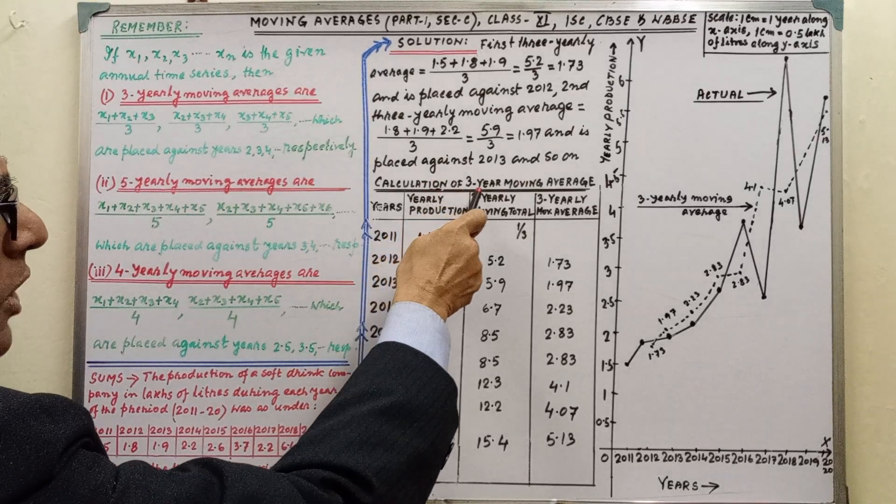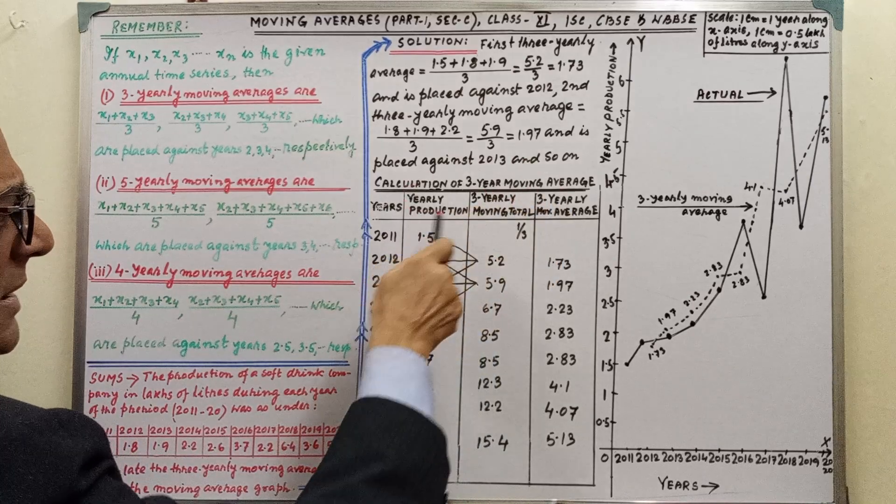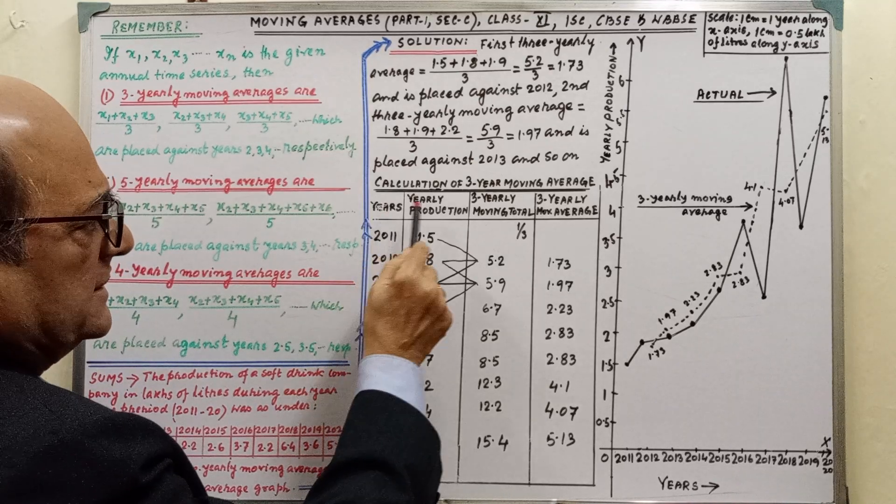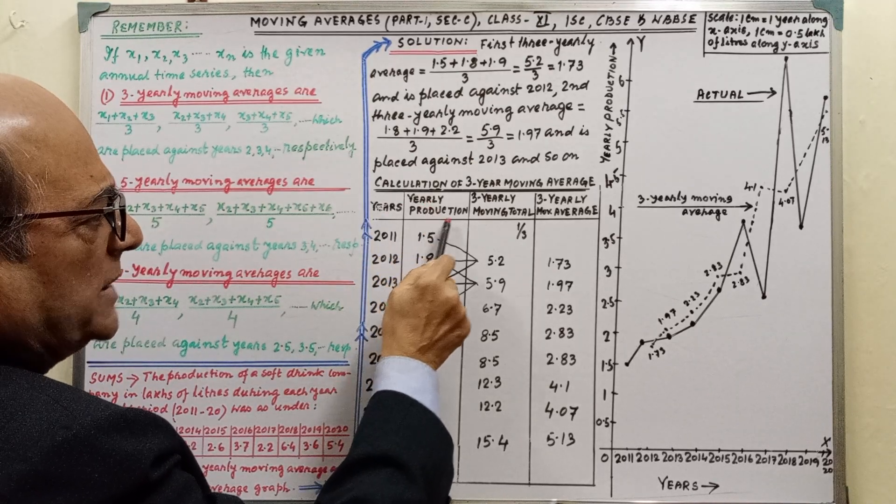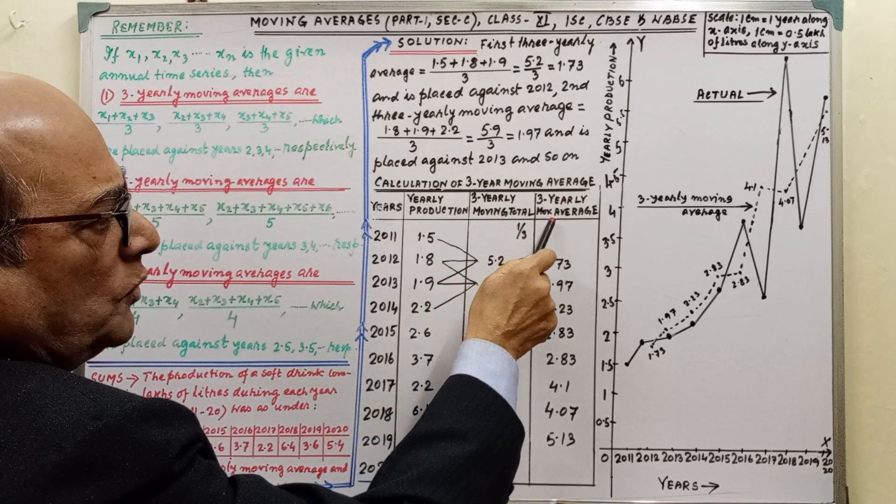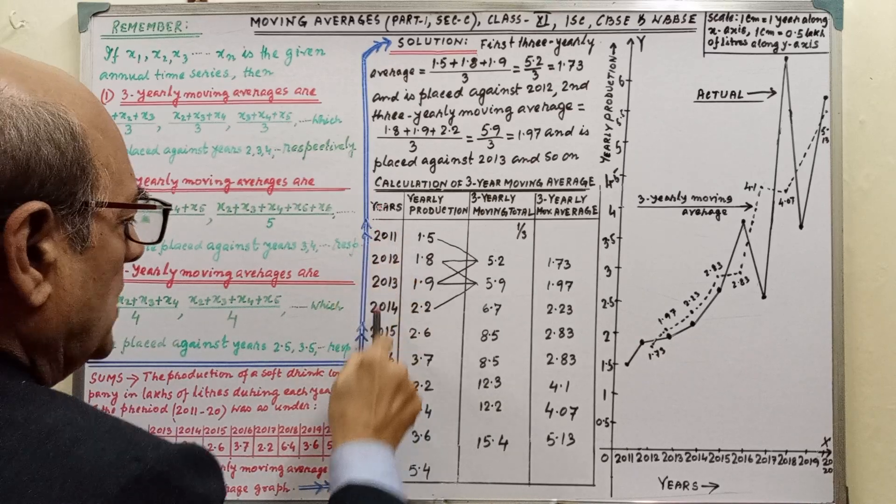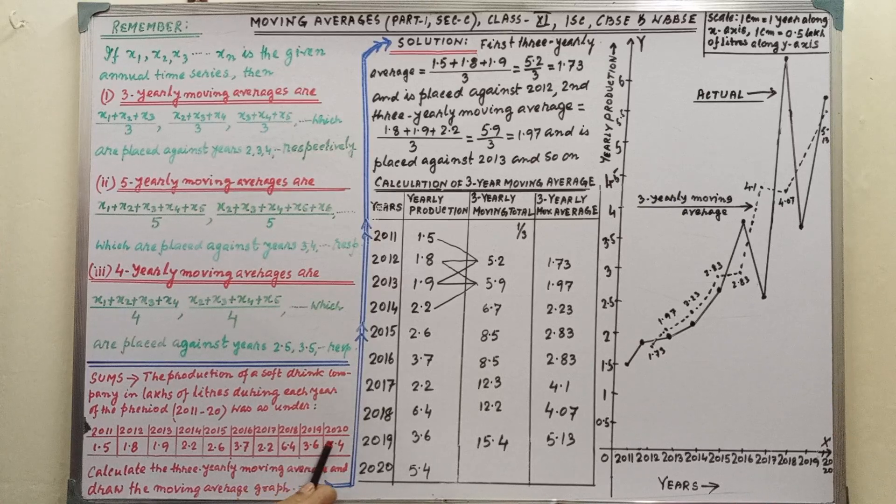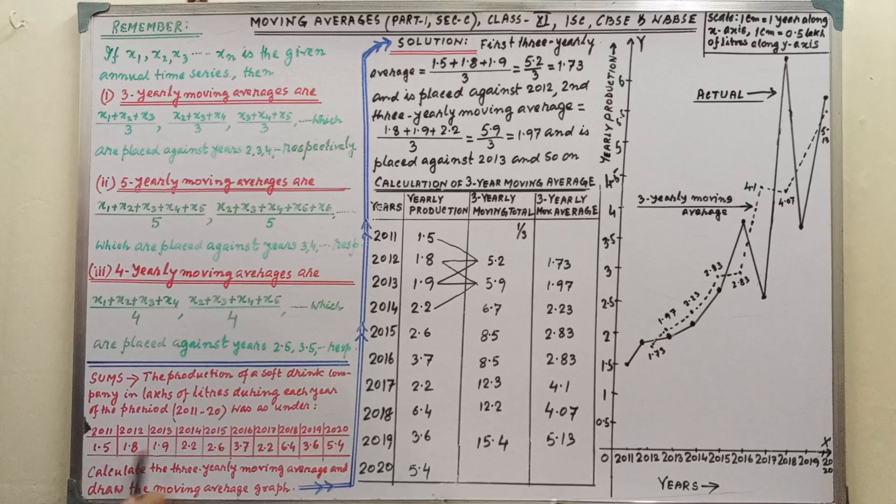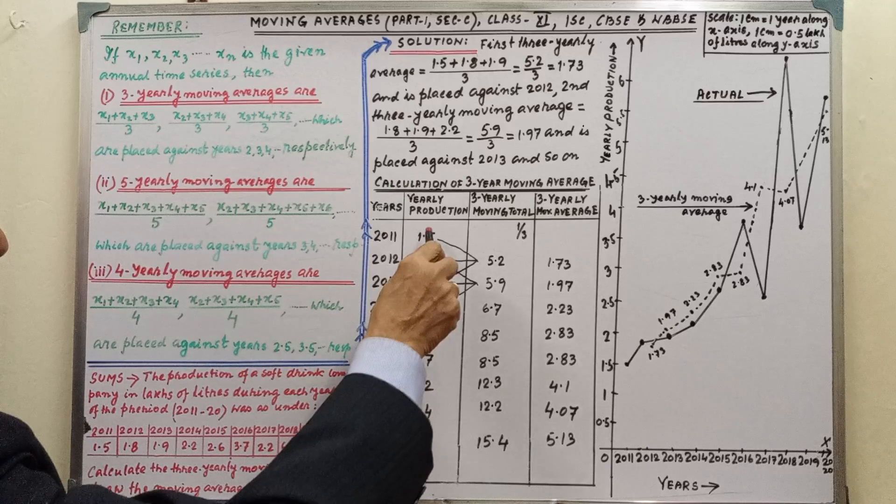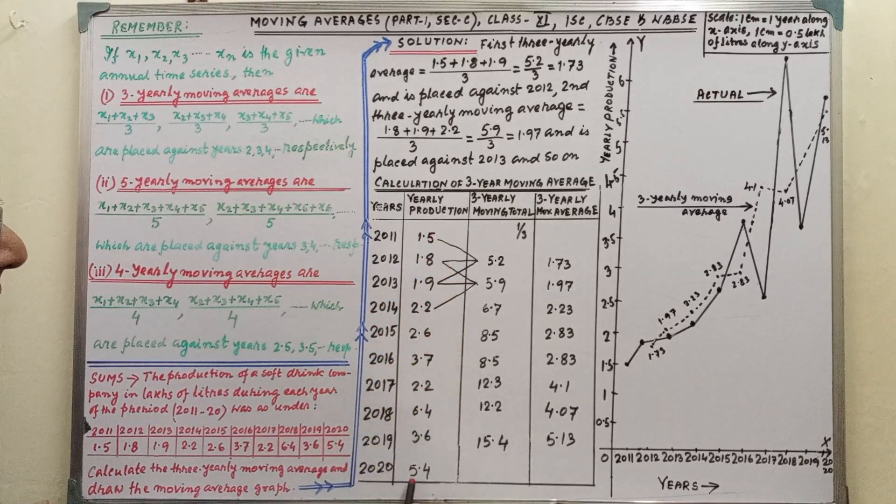Now, calculation of 3 year moving average. This table we have to do: years and yearly production, 3 yearly moving total, 3 yearly moving average. Years, you will get in the question. That is 2011 to 2020. And production, yearly production, that also given in the question, you have to write by looking the question.